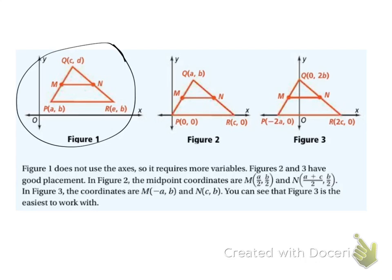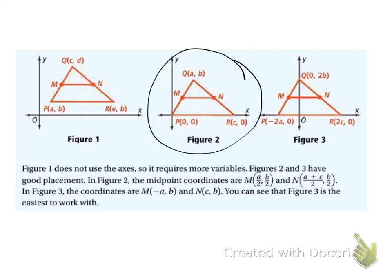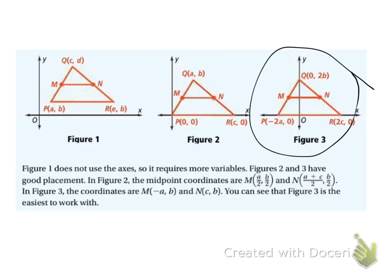If you look at this first one, they have A, B, C, D, and E — so they're using five letters. Whereas this one is using only three letters, as is this one. So where you put it is going to make it easier or harder to calculate different things like distance and midpoint.